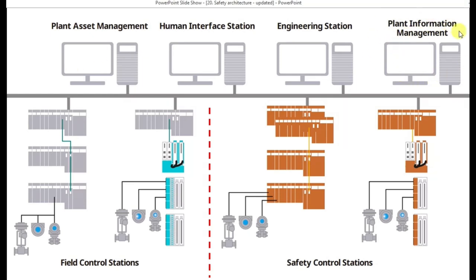Plant information management is an important server-based machine with multiple clients in different department heads' offices — like the plant VP's or plant director's offices. They get high-level parameters such as what is the production to date, incoming supply from an adjacent plant, recovery data, seawater consumption, cooling water consumption, instrument air consumption, and other critical parameters. These are all collected using the plant information management server and reported to high-level management.